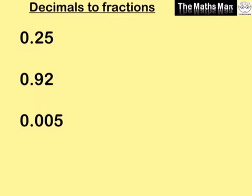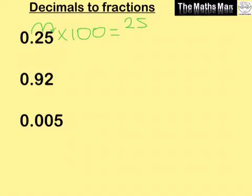The last thing is how to change decimals to fractions. For 0.25, we want to make it a whole number first. We move the decimal point twice, meaning we multiply by 100, giving us 25. Because we multiplied by 100, we put it over 100: 25 over 100.